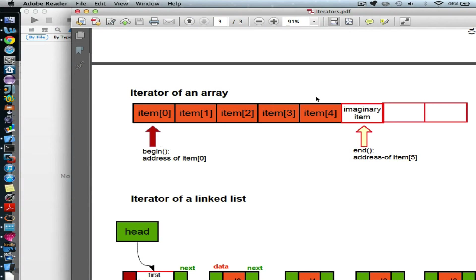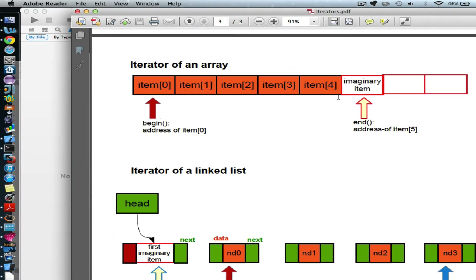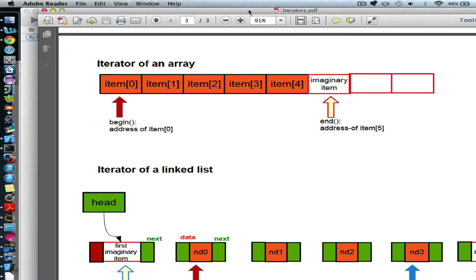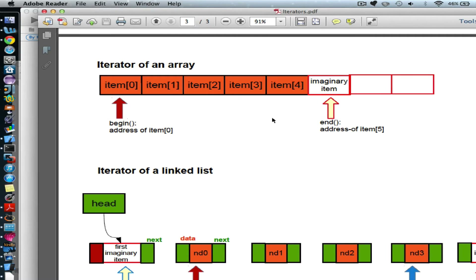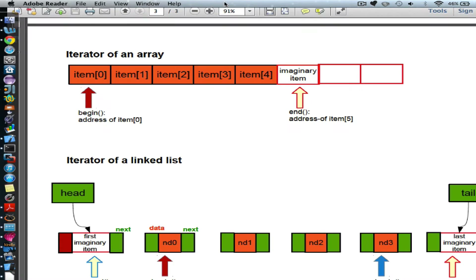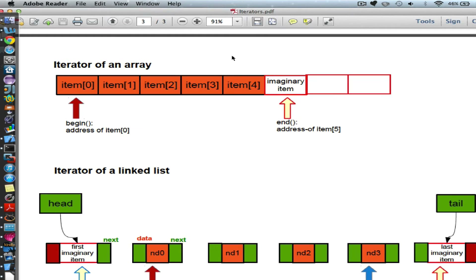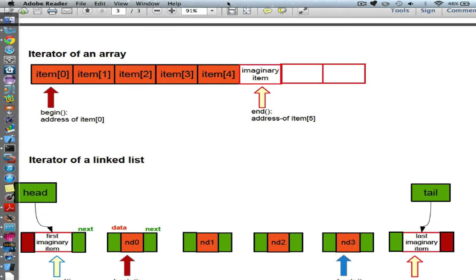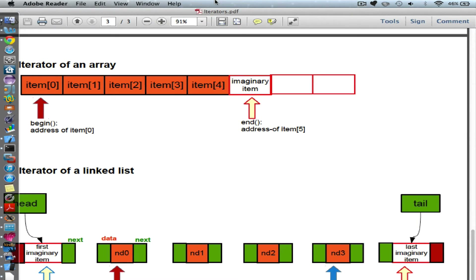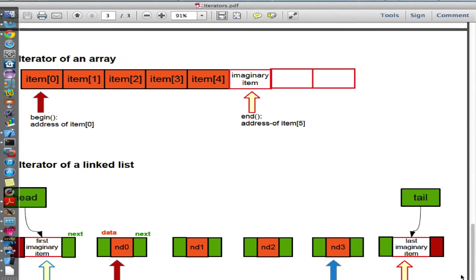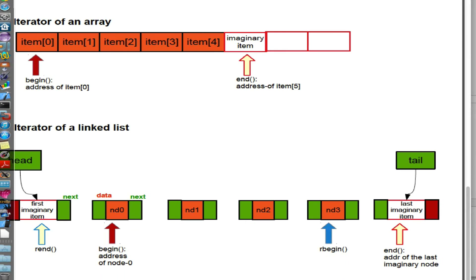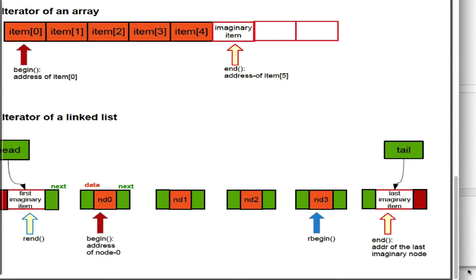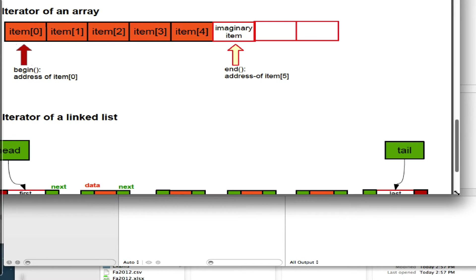Now let's move on to the second iterator. How do you create an iterator for a linked list? The difference between an array and a linked list is that with a linked list, there's no guarantee that your elements will be at contiguous memory locations. That's how it works.